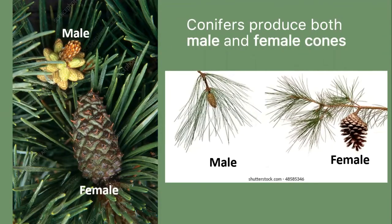Conifers produce both male and female cones. Male cones produce the pollen grains with the sperm cells. The female cone contains the ovule that produces egg cells.